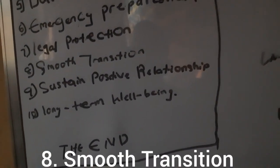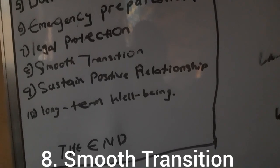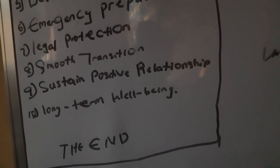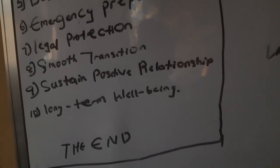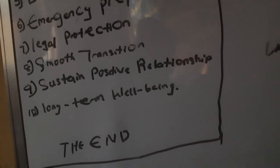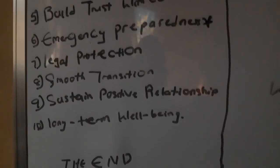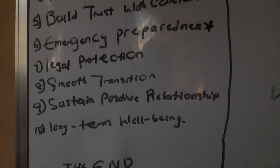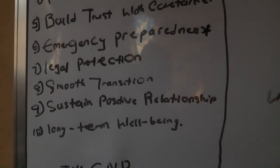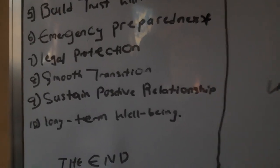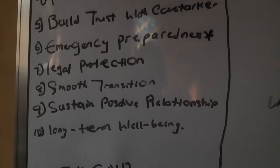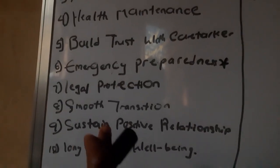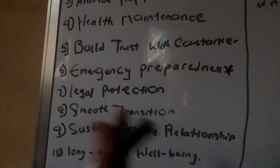Number eight is smooth transition. Everything in your farm will have a good and smooth transition, which means that everything will be going well in your absence. If you don't have a succession plan, try to have it now, because one of the benefits is that you have a smooth transition.